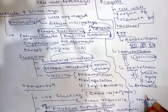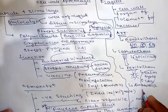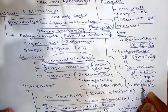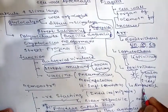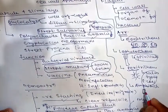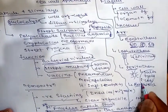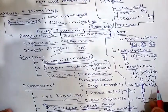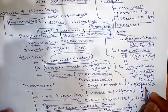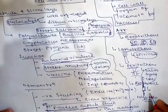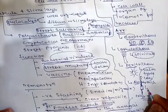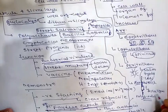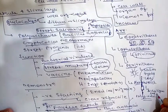The next arrangement is amphitrichous — a single flagellum present at both ends of the bacterium. One flagellum at each pole. Amphitrichous condition is found in Alcaligenes faecalis.